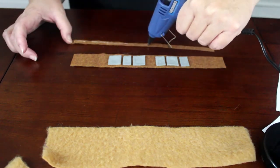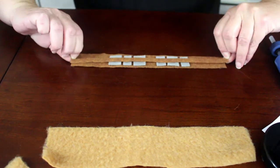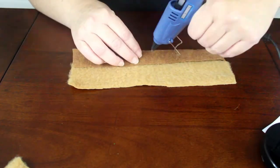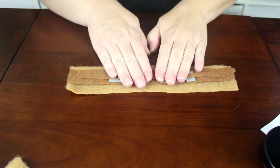Glue the thin medium brown stripe on top of the gray squares. Then glue the whole piece onto the tan right down the center.